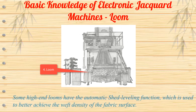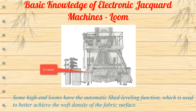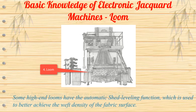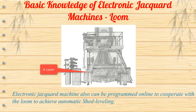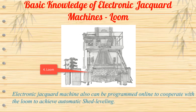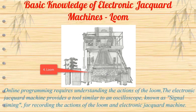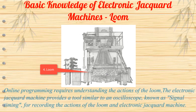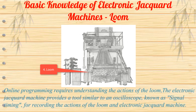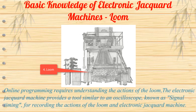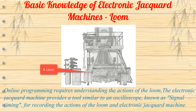Some high-end looms have the automatic shed leveling function, which is used to better achieve the weft density of the fabric surface. The electronic jacquard machine can also be programmed online to cooperate with the loom to achieve automatic shed leveling. Online programming requires understanding the actions of the loom. The electronic jacquard machine provides a tool similar to an oscilloscope, known as signal timing, for recording the actions of the loom and electronic jacquard machine.